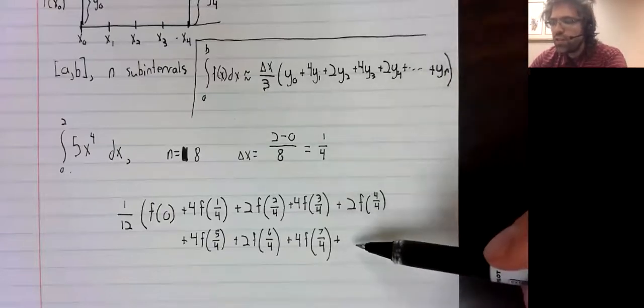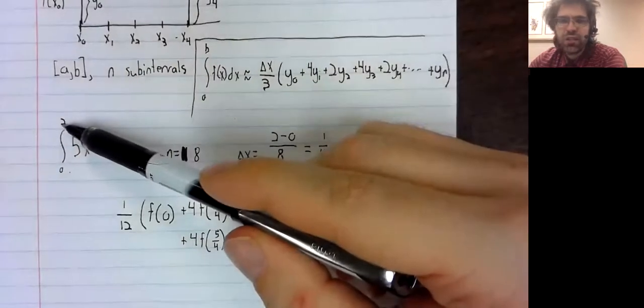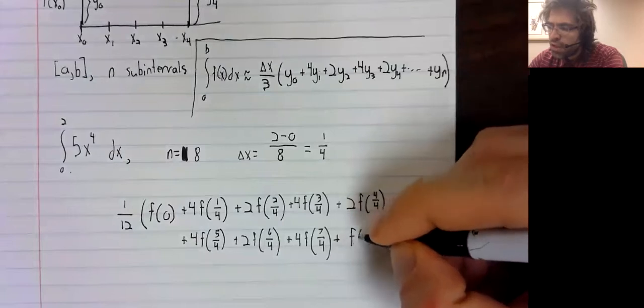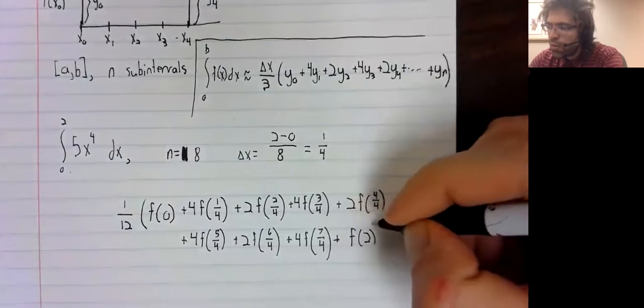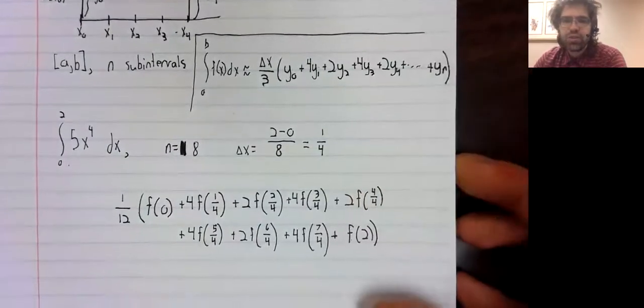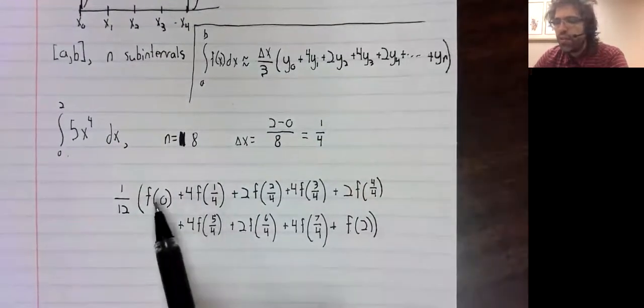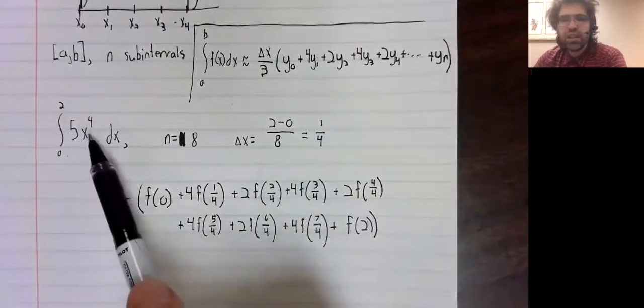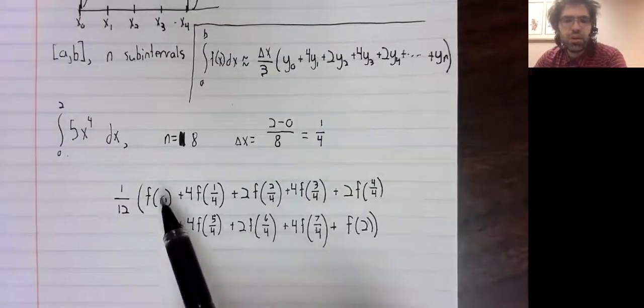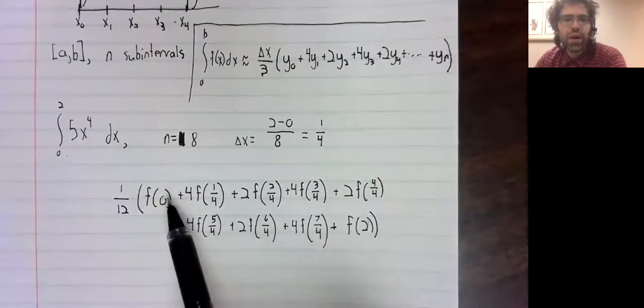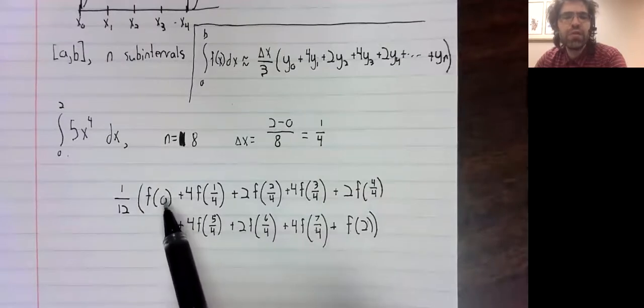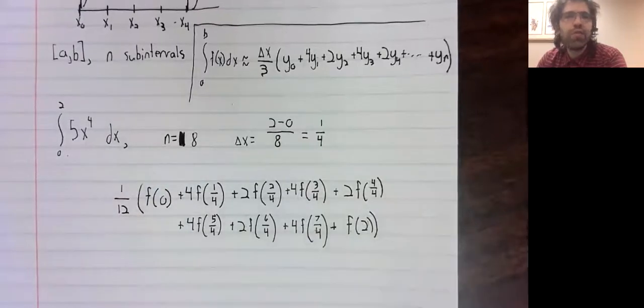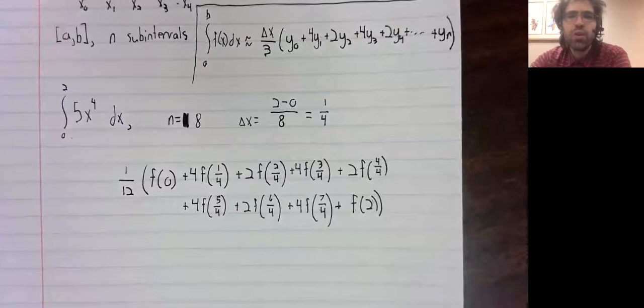The last term will be the end of this interval and it does not have any number in front of it. And then to find these values, well, we just take them and stick them in here, stick zero in here for f of zero, for f of one-fourth, stick one-fourth in here and so on.